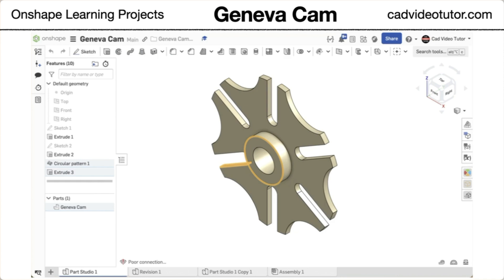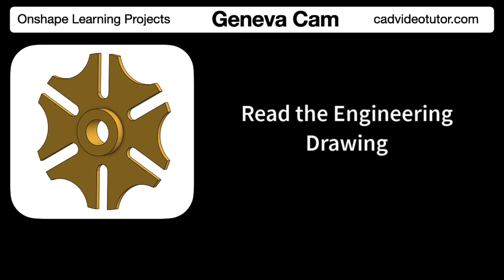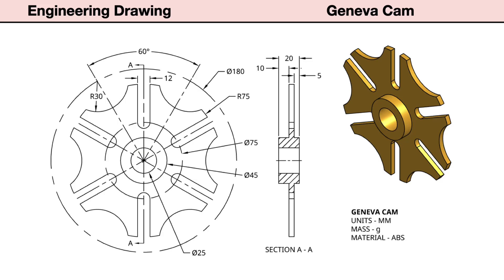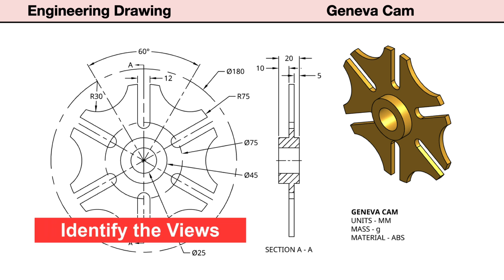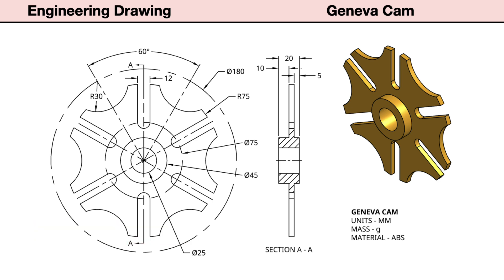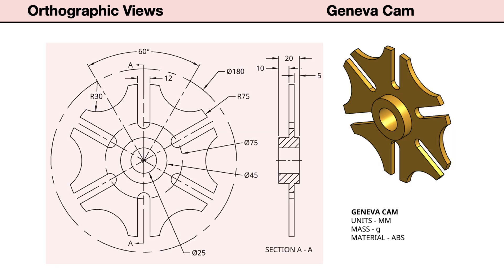Now you are ready to begin the project. In this segment, we will read the engineering drawing for this part called a Geneva Cam. The drawings provide all of the information we need to model this part using Onshape. Let's start by identifying the views provided in the drawings. This drawing contains two standard view types to fully describe the shape and size of this mechanical part. The isometric view shows a pictorial, which helps us visualize the part in three dimensions. The orthographic drawings show two principal views.